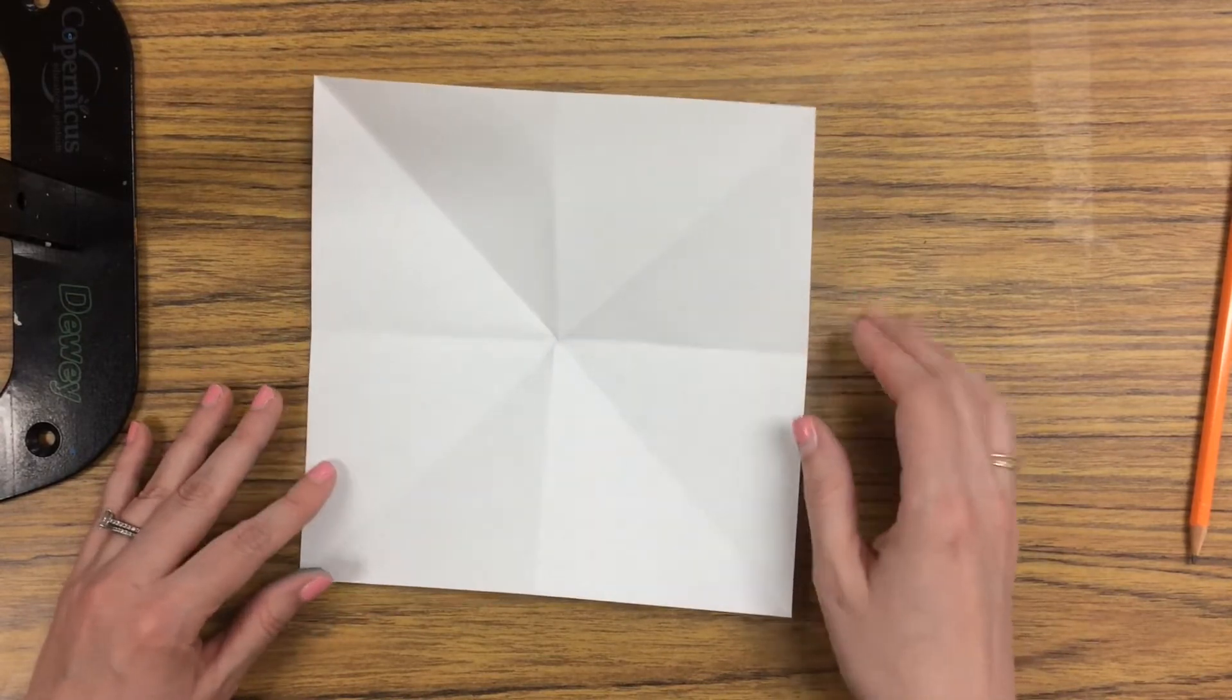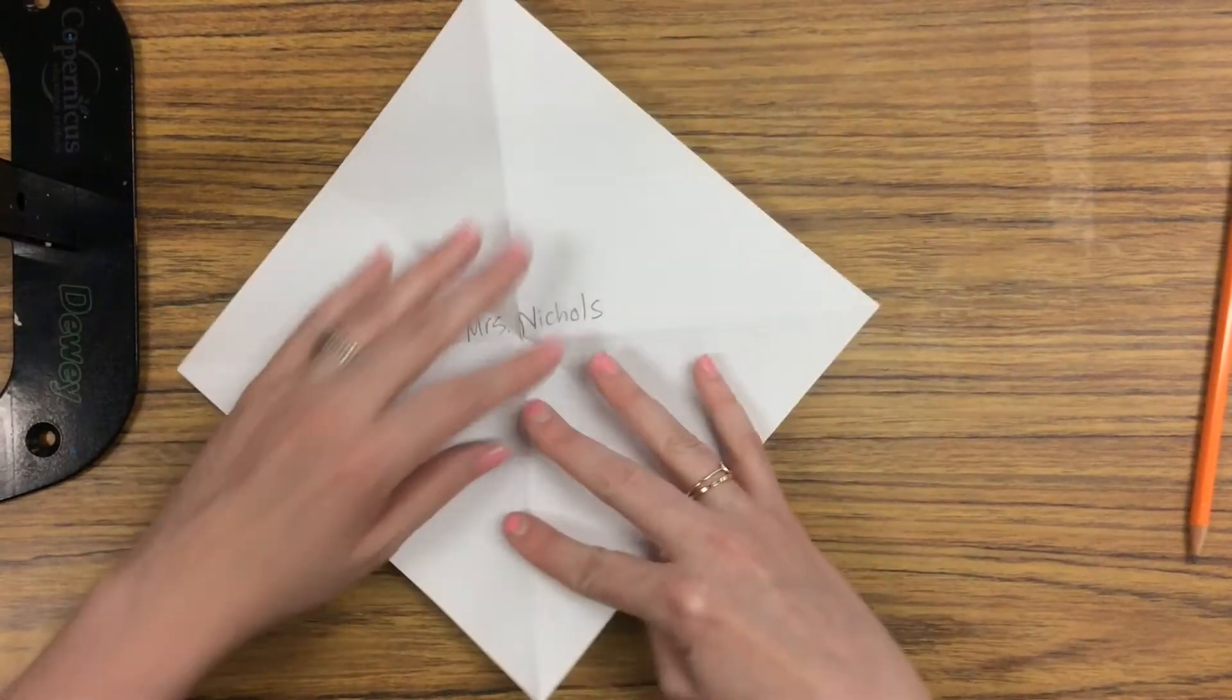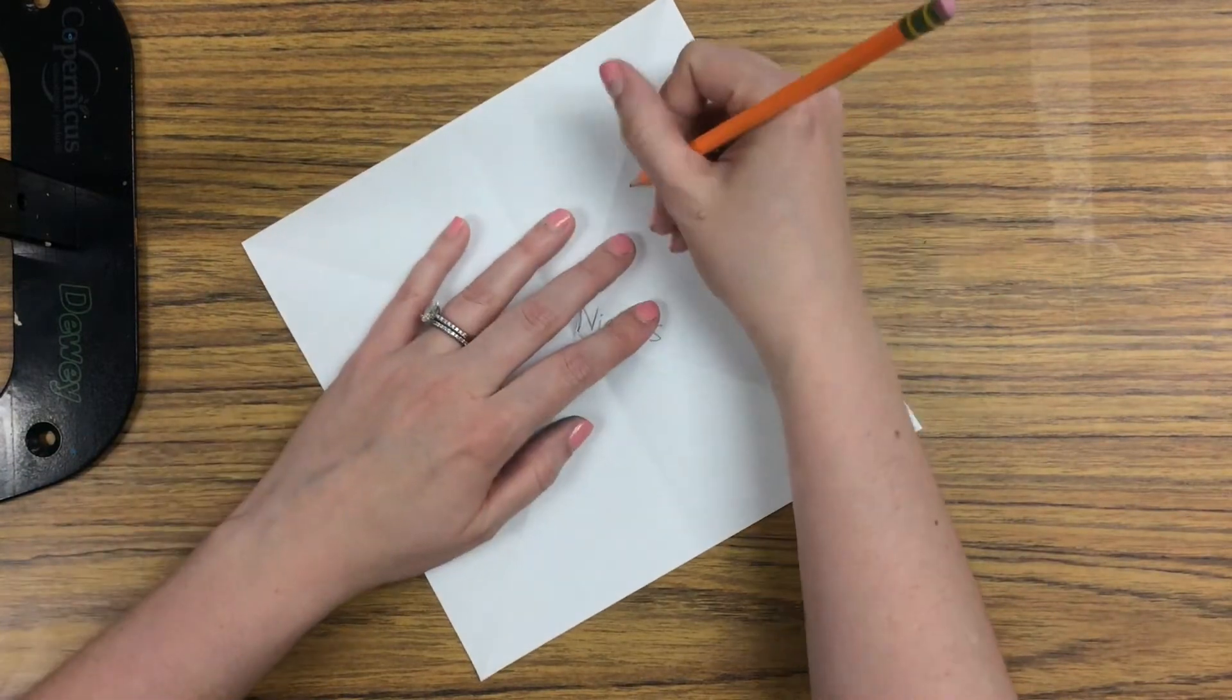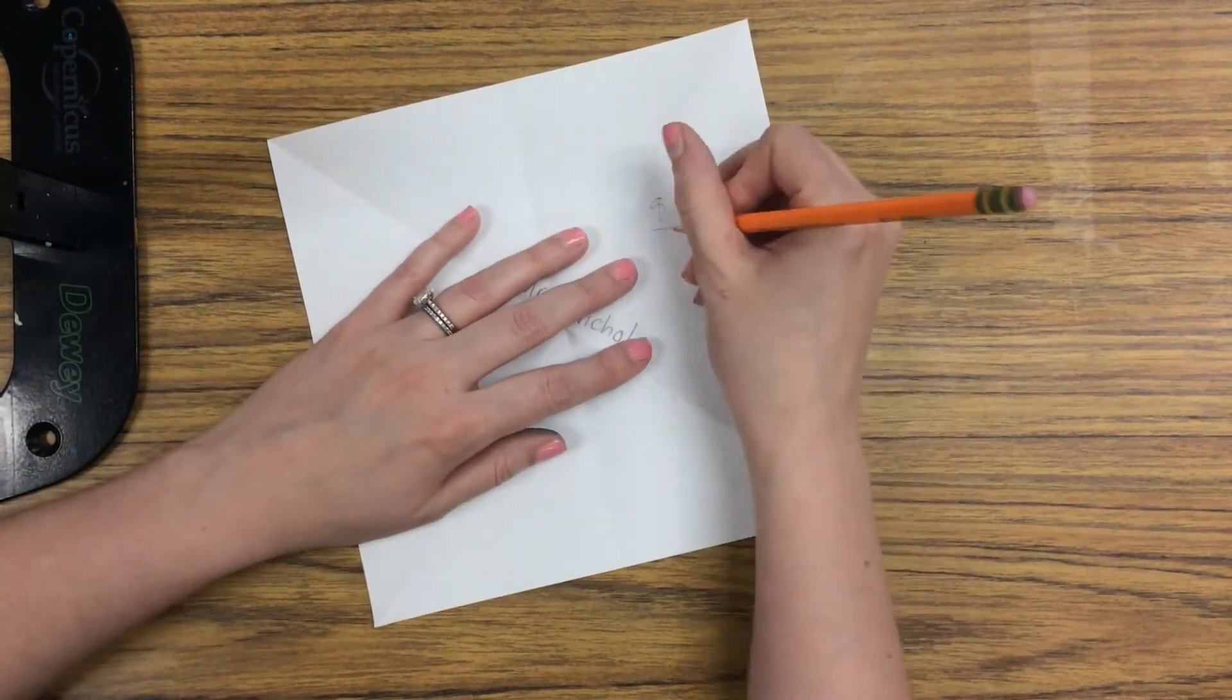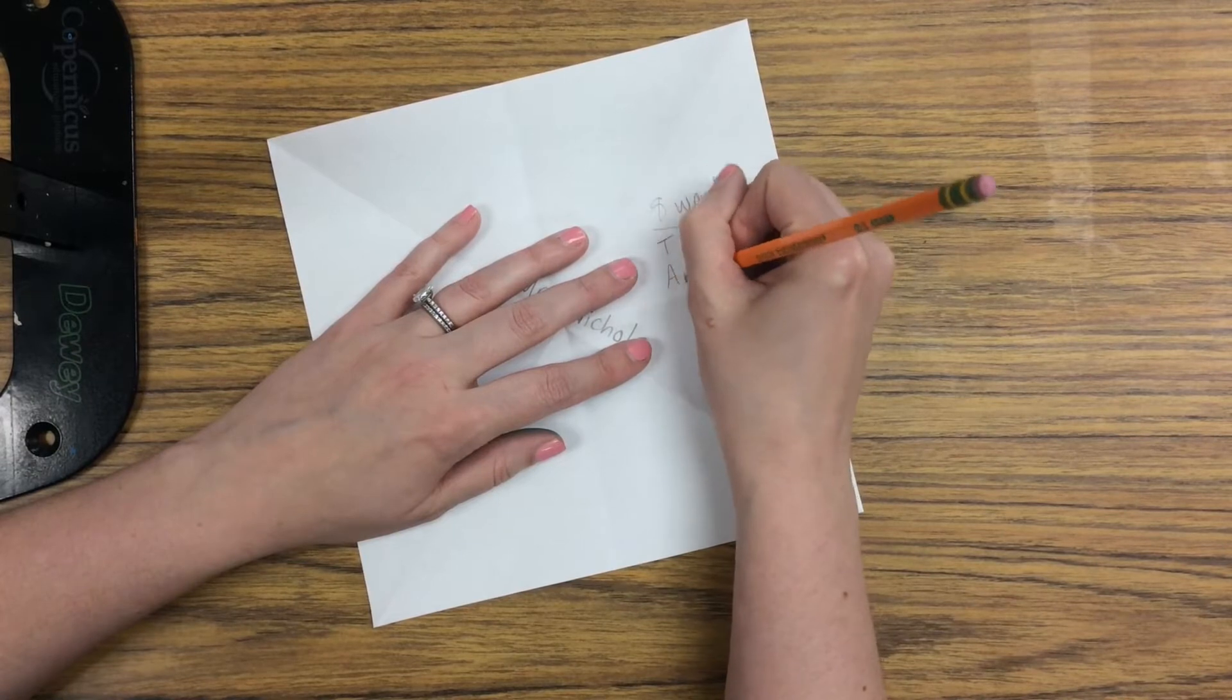Once you have your eight sections, flip your paper back over, and you are going to list eight words that describe you. These can be adjectives, they can be things that you like.